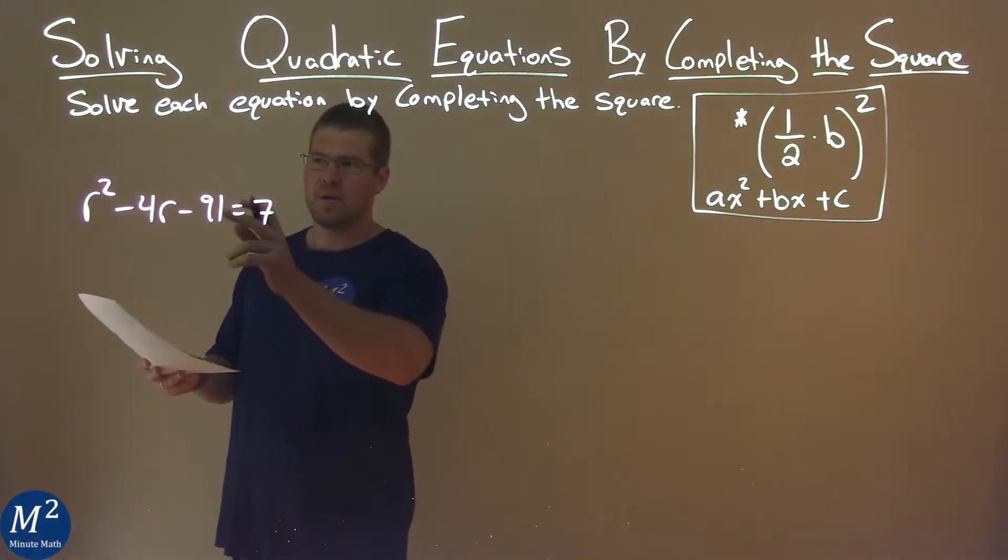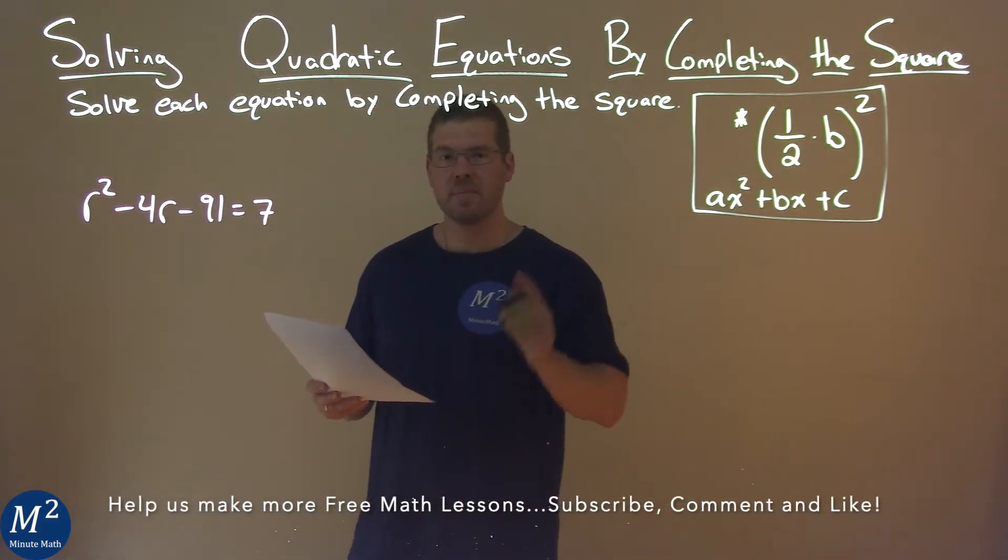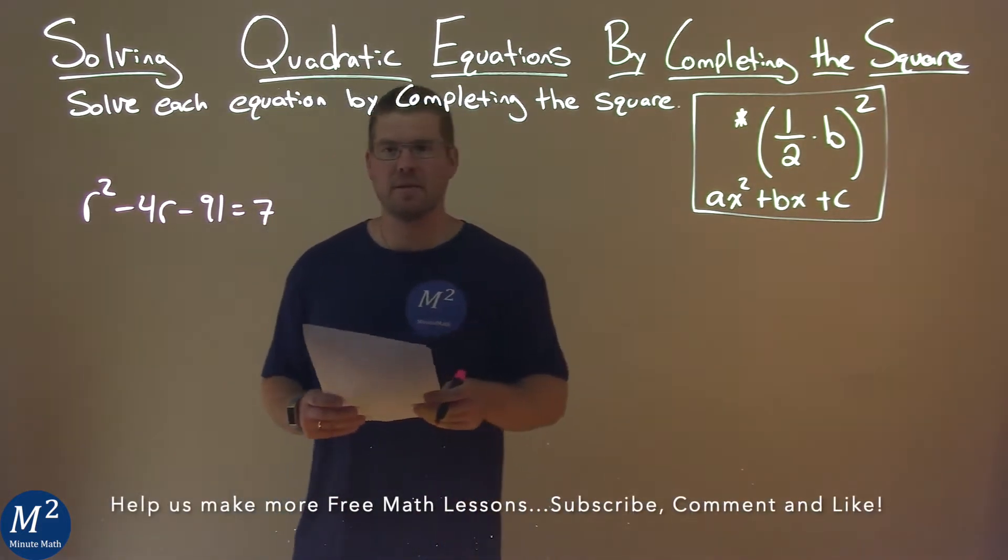We're given this problem right here: R squared minus 4R minus 91 equals 7, and we want to solve this by completing the square.